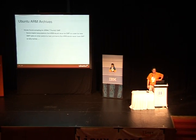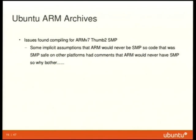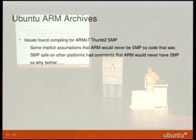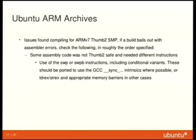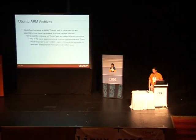Some fun things — issues we found compiling ARMv7 for SMP and Thumb. There were implicit assumptions that there never would be SMP code. We had to go find all of them and fix it. There were also things you have to do in assembly using the SWP instructions and conditional variants — GCC had to be ported, use intrinsics where possible, use other memory barriers in other cases. In the references at the end of this presentation, we have several pages in the wiki that are very well documented on what you need to do differently for ARM assembly code. We worked very closely with ARM to get that working the way we expected.